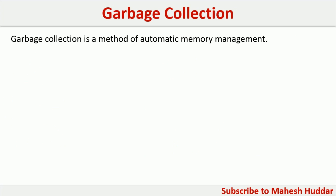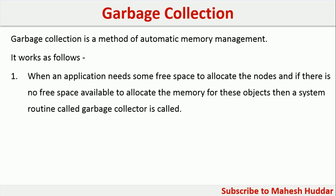Garbage collection is a method of automatic memory management. It works as follows: when an application needs free space to allocate to new objects, first it will scan the entire memory. If free space is available, it will be allocated to that particular object. Otherwise, a garbage collector will be called.